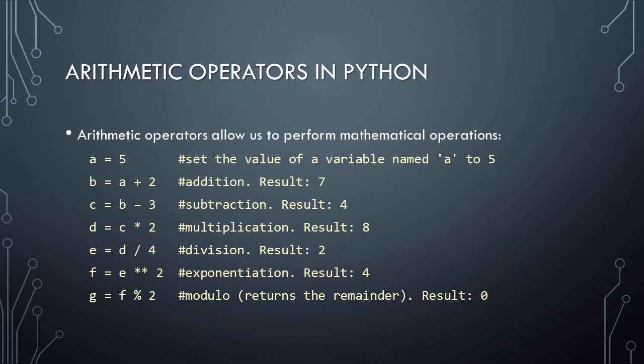For example, 4 modulo 2 returns 0, because 4 is evenly divisible by 2. That is, there is no remainder. 5 modulo 2, however, would return 1, because 5 divided by 2 has a quotient of 2 and a remainder of 1. Let's see a demonstration of all of these arithmetic operators being used in Python.